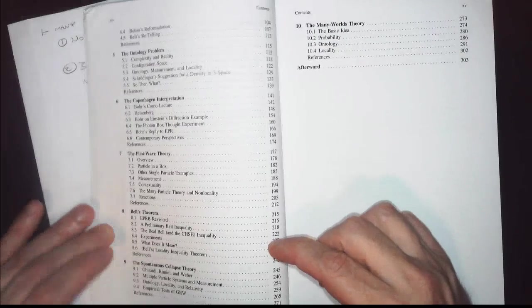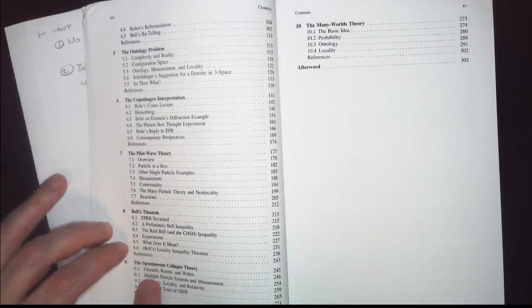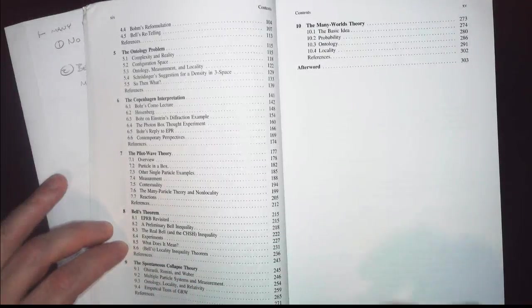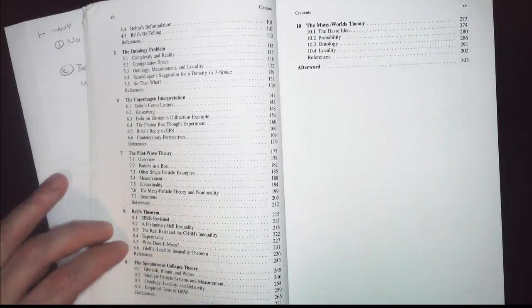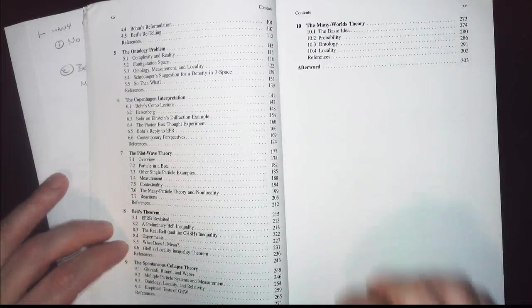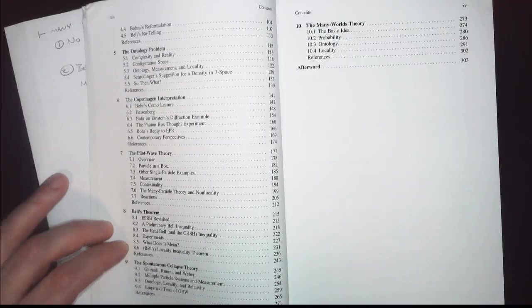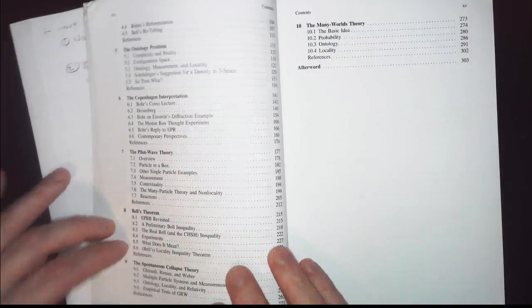Then we have a spontaneous collapse theory, GRW. Usually people talk about it as GRW, not spontaneous collapse. Basically that means your wave function is wandering around, and then every once in a while it makes a measurement of itself, and then it goes around for a little longer, and so forth and so on. So notice empirical tests. Nice to see that. Most of these don't have them. The interpretations don't tend to have those sorts of things.